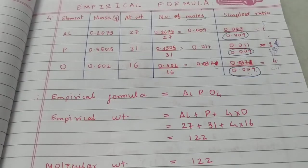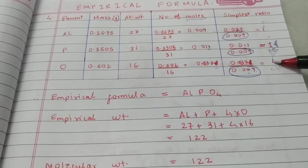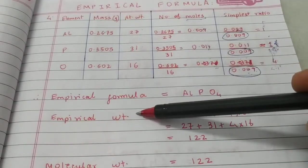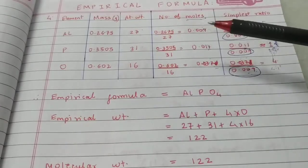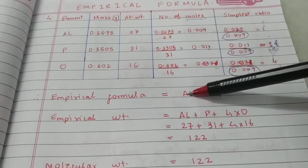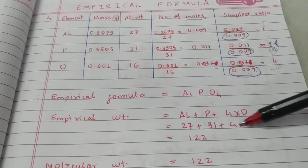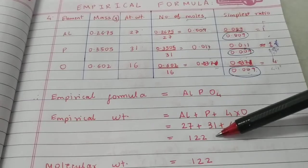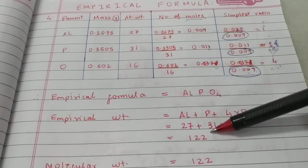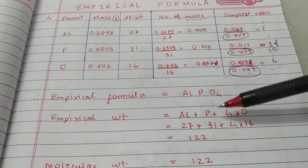After making the table, there is a 5-step process. Step 1: Write the empirical formula using the ratio. Step 2: Find the empirical weight — just like calculating molecular weight using molecular formula, calculate empirical weight using the empirical formula. So aluminum is 27, phosphorus is 31, and 4 oxygen atoms is 4×16 = 64. Adding them gives 122 — that's the empirical weight. The atomic weights are given in the question.